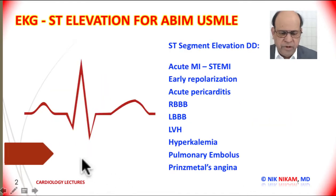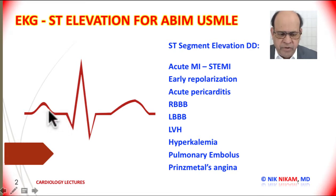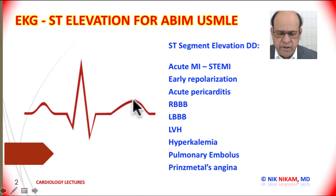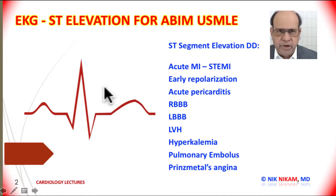To give you an overview of basic electrocardiographic representation of a heartbeat: we have the P wave which represents atrial activity, followed by the PR interval which represents conduction through the AV node. Then we have the QRS complex which represents left ventricular depolarization. Then we have the ST segment followed by the T wave which represents left ventricular repolarization. This presentation is going to focus on ST segment abnormalities, particularly ST segment elevation.